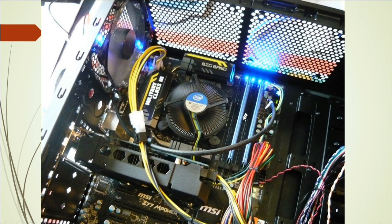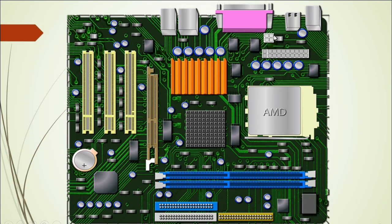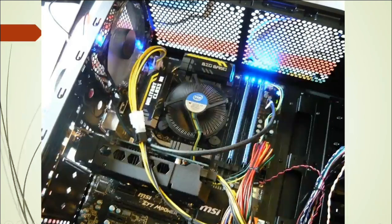These are the RAM — random access memories. This is the four-pin CPU power connector, exactly as discussed. This is the power for the CPU. And here is the main ATX connector that powers the whole motherboard.